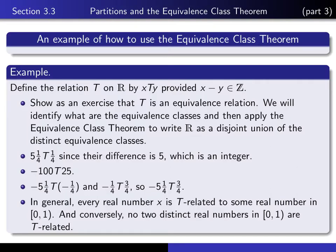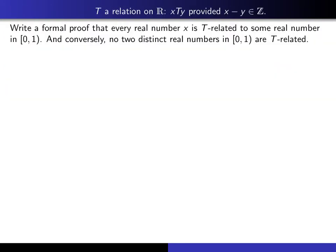So now that we've convinced ourselves that this thing has to be true by means of that picture, the question now is, can you write down a formal proof that it's actually true? So next, I want to write a formal proof that every real number x is T-related to some real number in this interval from 0 to 1. And conversely, no two distinct real numbers in that interval are T-related. So why don't you put your video on pause and see if you can come up with a formal proof of that fact.